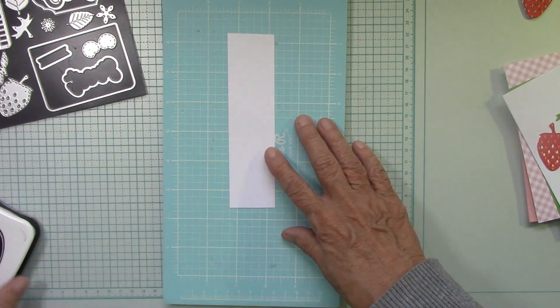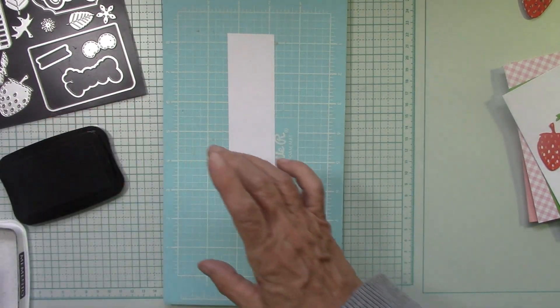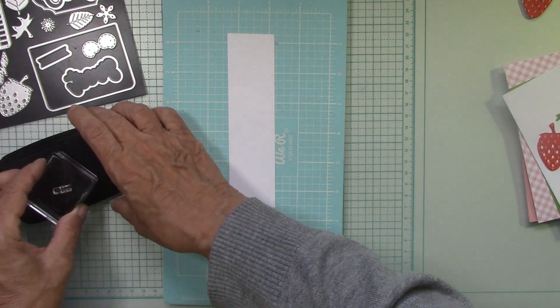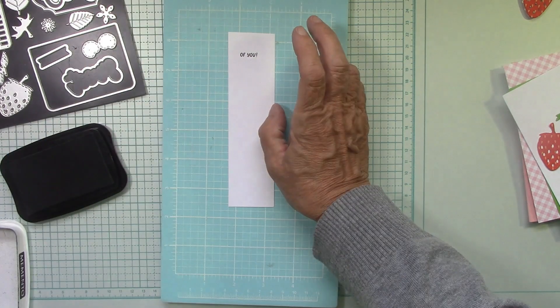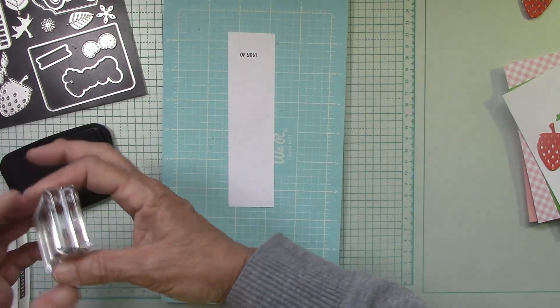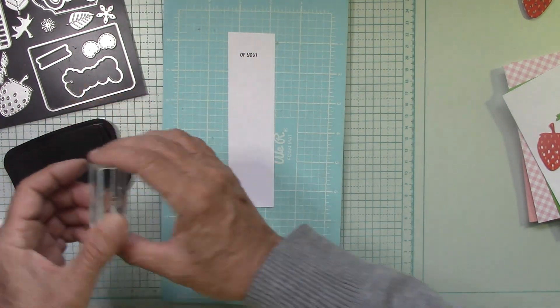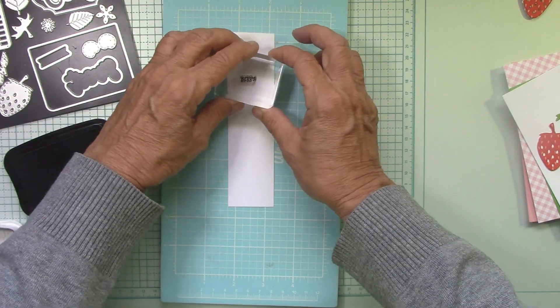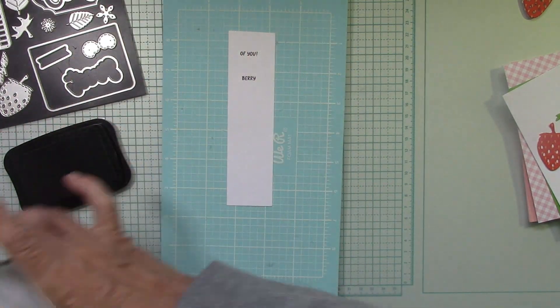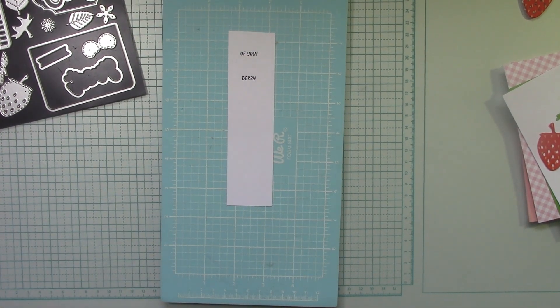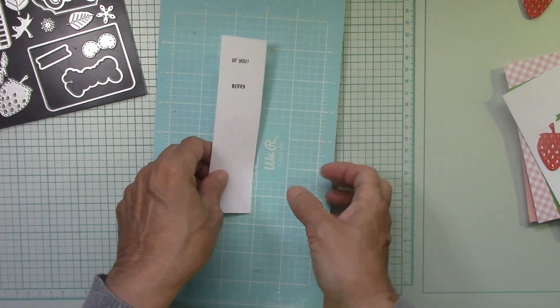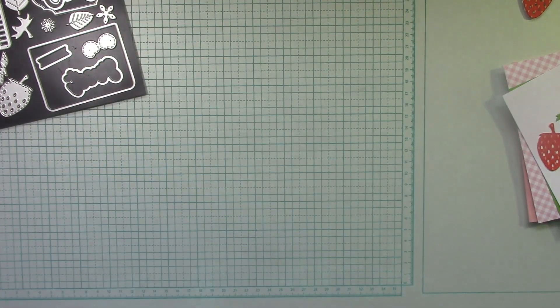Here's a piece of scrap paper. I'm just going to use some Memento Black ink. I'm going to stamp of you here and then berry. We'll die cut that out in just a moment. That's all the stamping that we need to do.